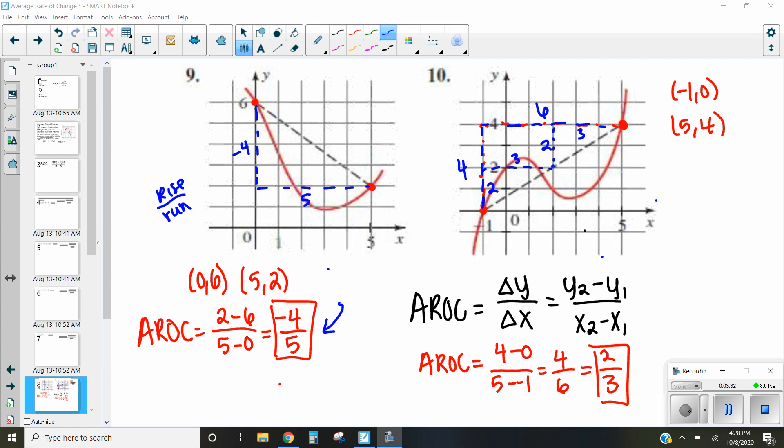Okay, hopefully you've had a chance to go over that average rate of change problem. Now again, there are two ways that we can solve these. We can either do it using the average rate of change equation here, in which case I get 2 over 3 or 2 thirds.